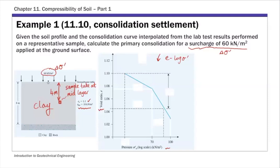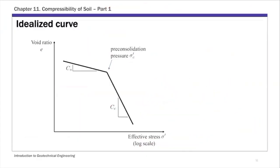Today I'm going to talk about a more generic case. More often you're not given this E log P curve directly. Instead, you're given moduli — specifically these two slopes: CS and CC. CS is the slope of the recompression curve, and CC is the slope of the initial loading or virgin compression curve. Also given is the pre-consolidation pressure, sigma_C prime. That's typically what you get from the consolidation lab test.